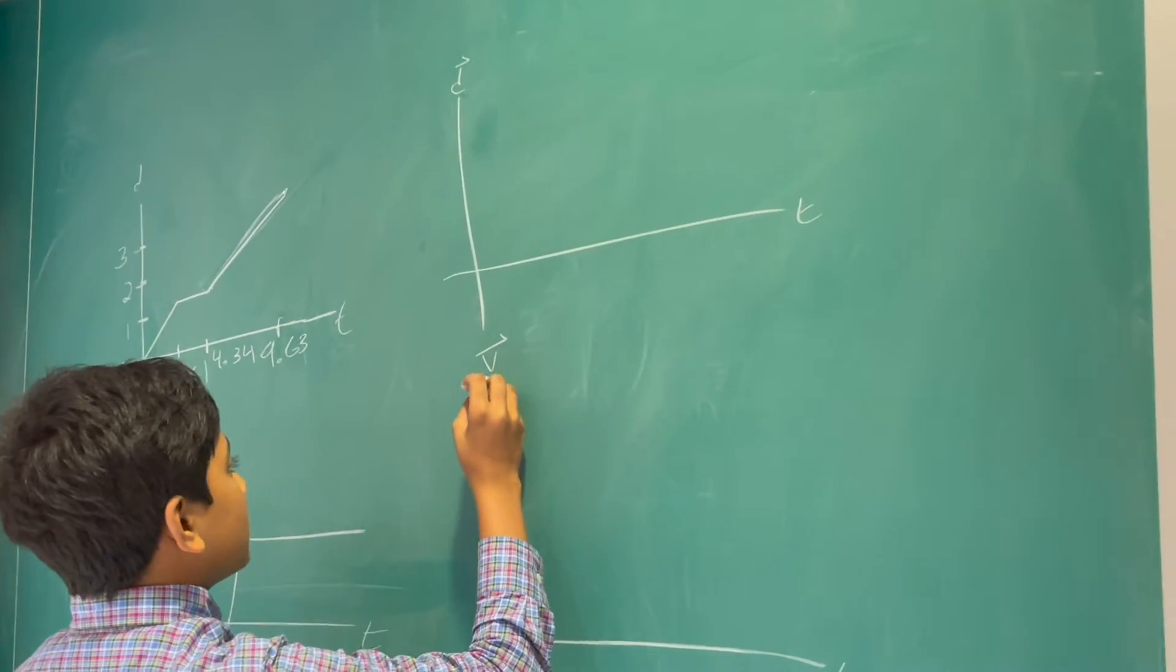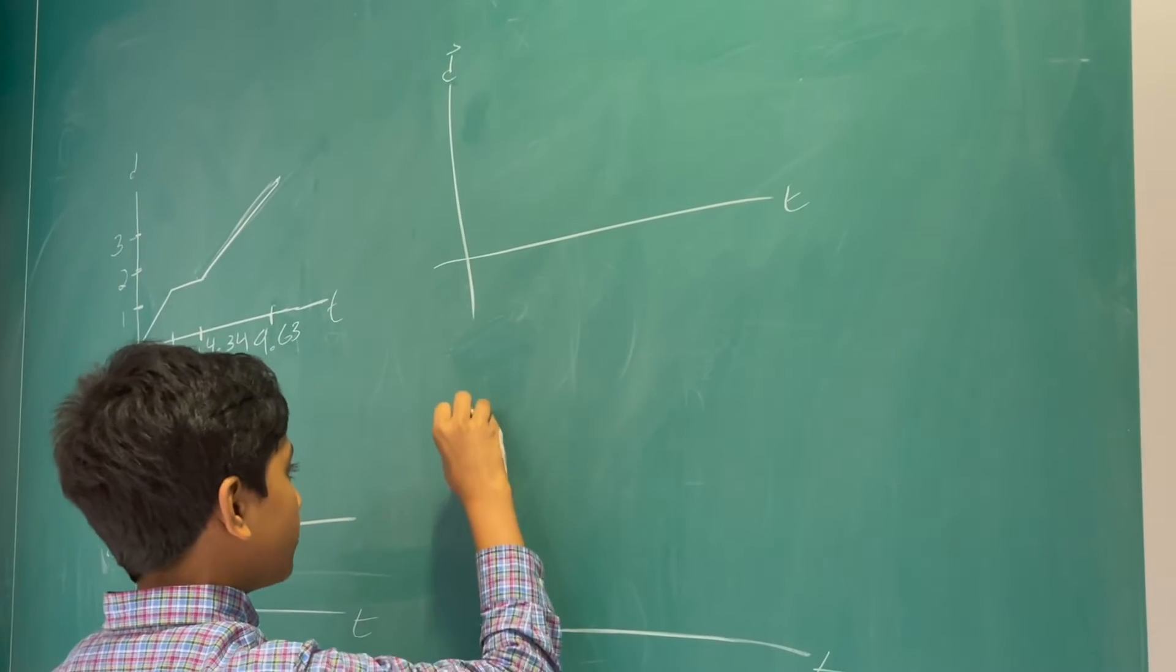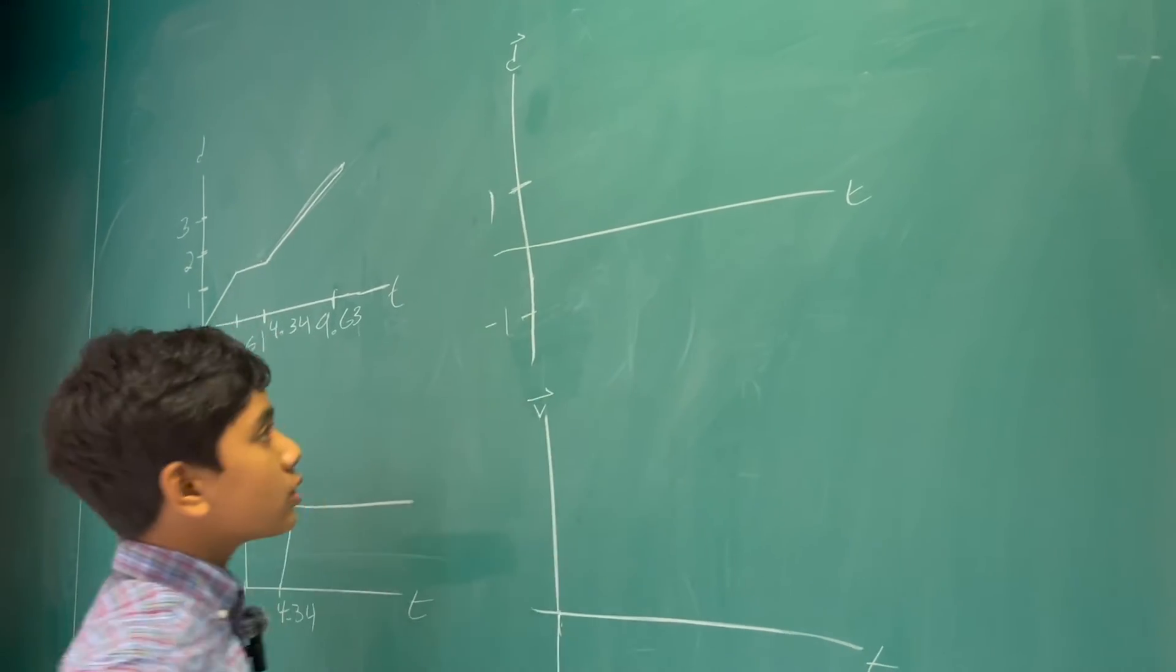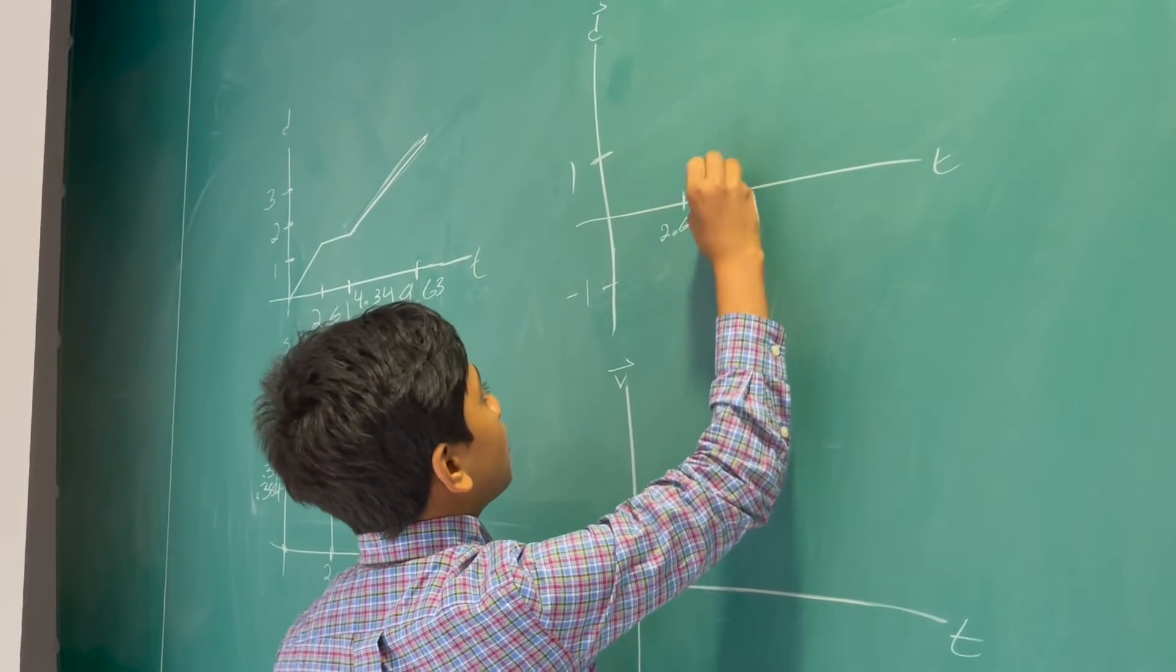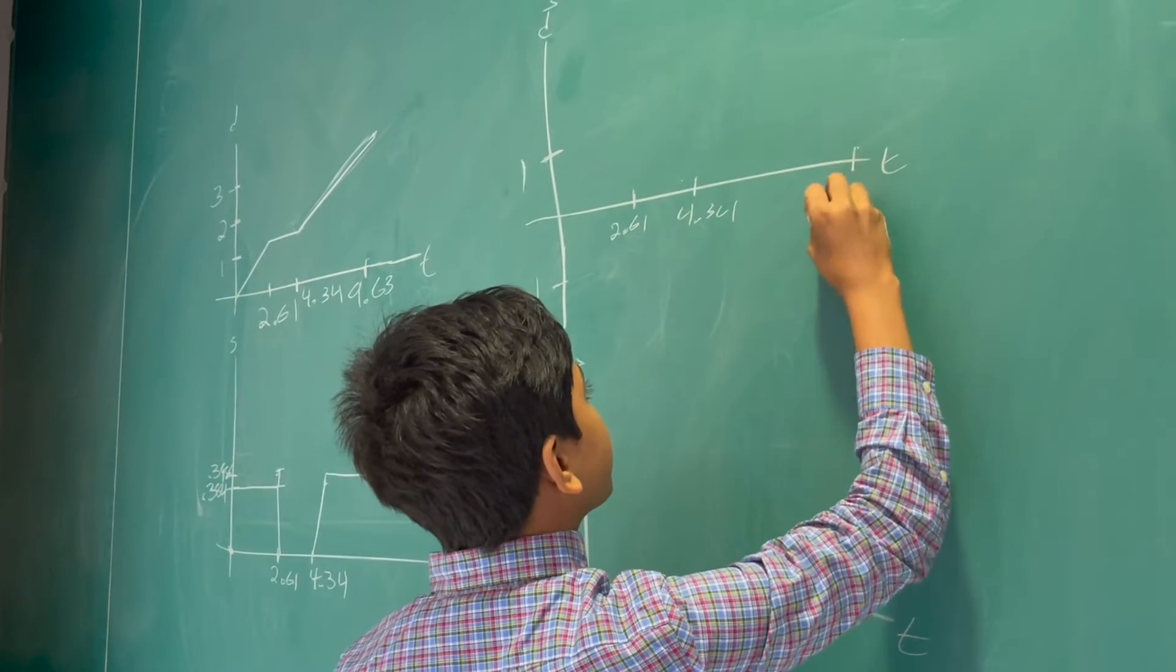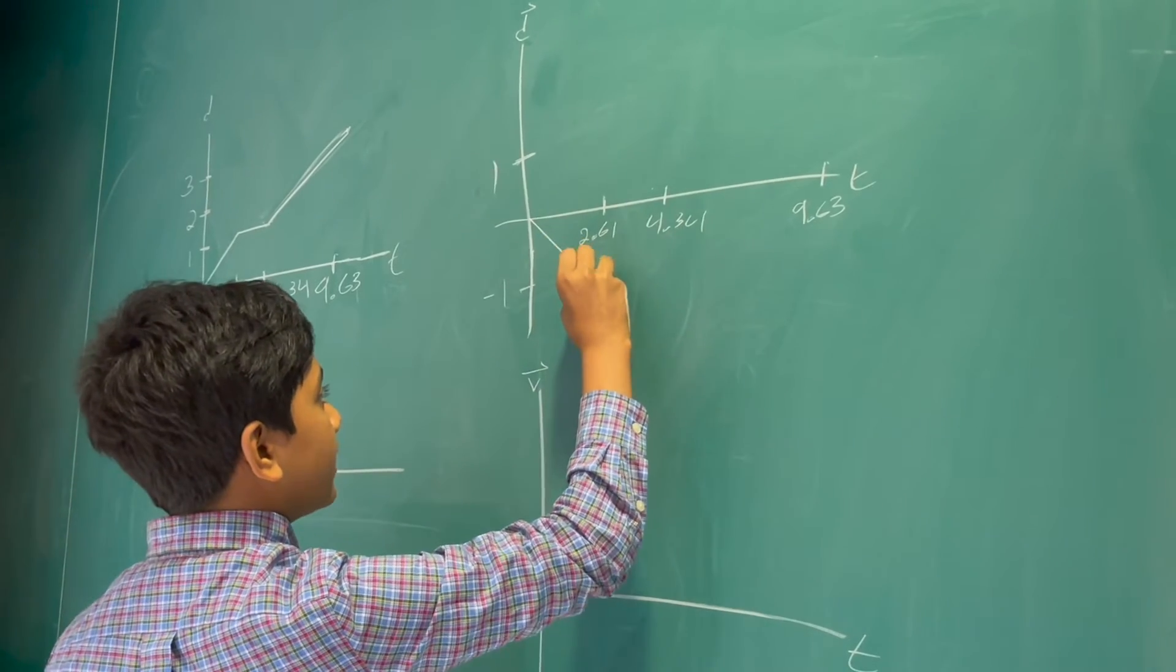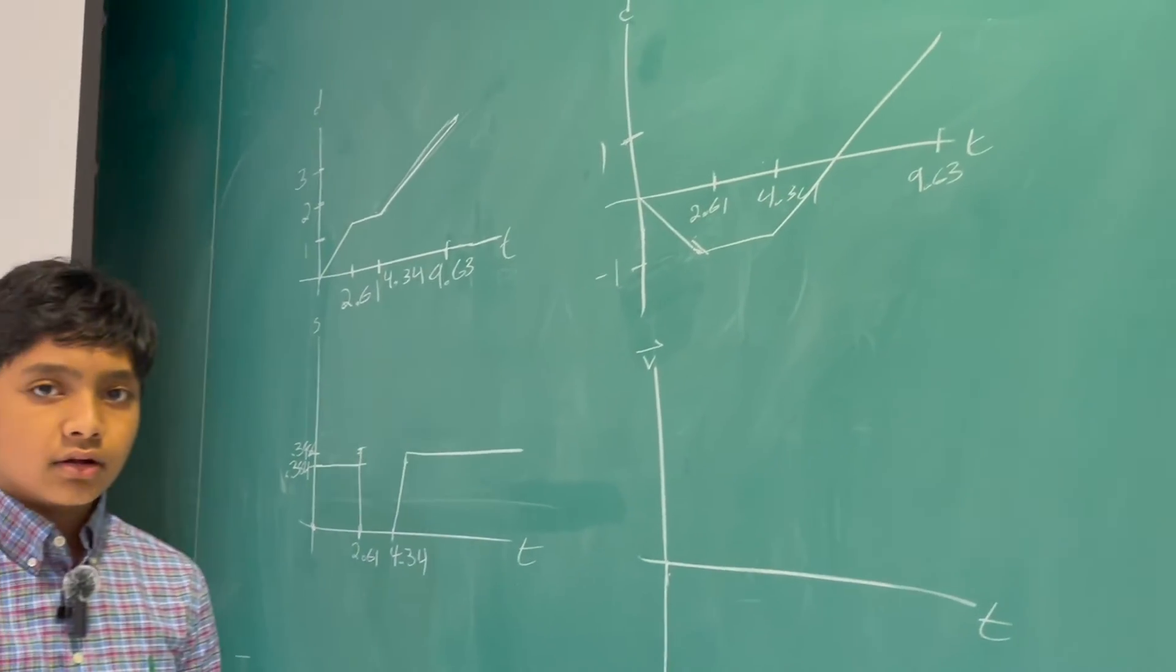So, now, for displacement. I'm actually going to have to extend this graph a little bit, as well as the velocity graph. So, here we go. Now, we have minus 1 meter and 1 meter, so kind of like a number line. And then, we have 2.61, 4.34, 9.63. So, it goes down here. And then, it becomes stagnant for a while. And then, it rises up pretty quickly back there.